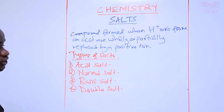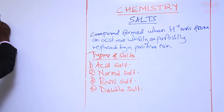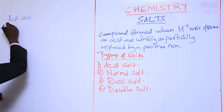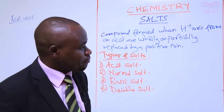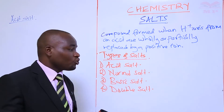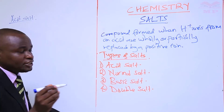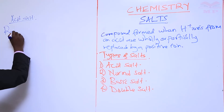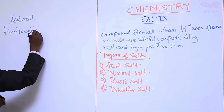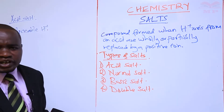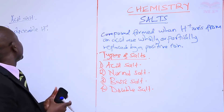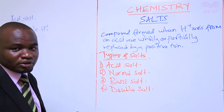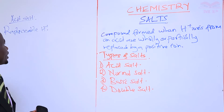We are going to start with an acid salt. In Form 1 we learned about acids and said all acids contain a hydrogen ion. The distinguishing property of an acid salt is that all acid salts contain a replaceable hydrogen ion. An acid salt is identified by the presence of a hydrogen ion. So an acid salt can be defined as a salt that contains a replaceable hydrogen ion.